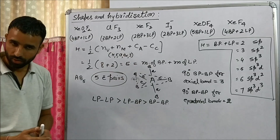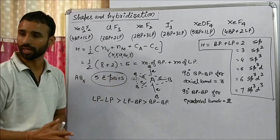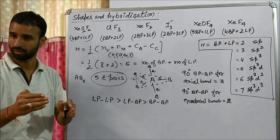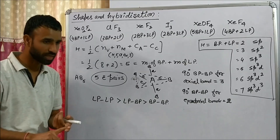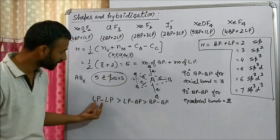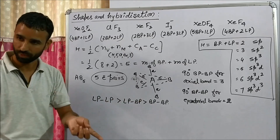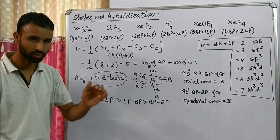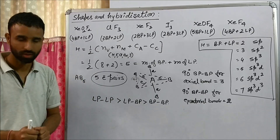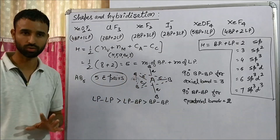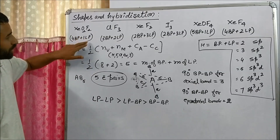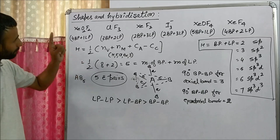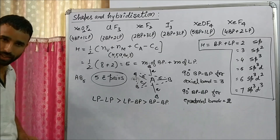So lone pairs prefer to occupy the equatorial position, which has less repulsion. Since lone pairs are repelled more than bond pairs, they try to occupy the position with less repulsion — the equatorial position. So as we have one lone pair, the lone pair should occupy the equatorial position.